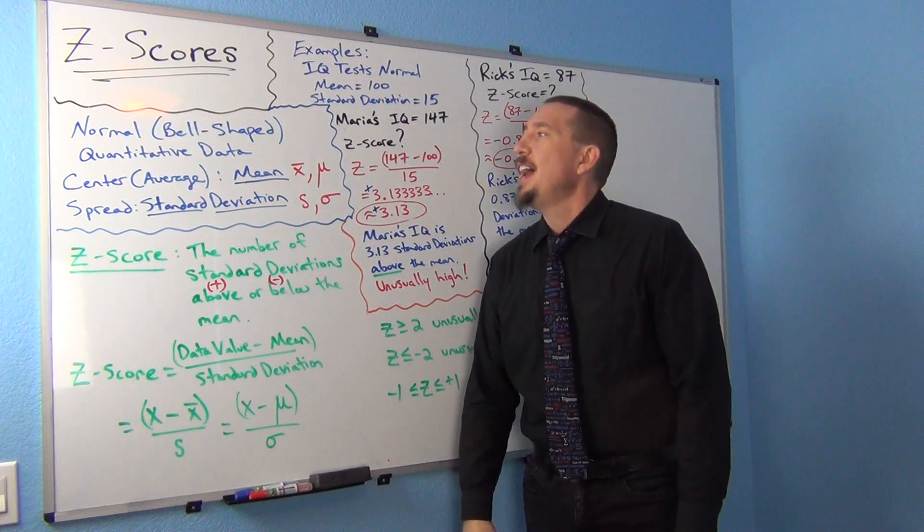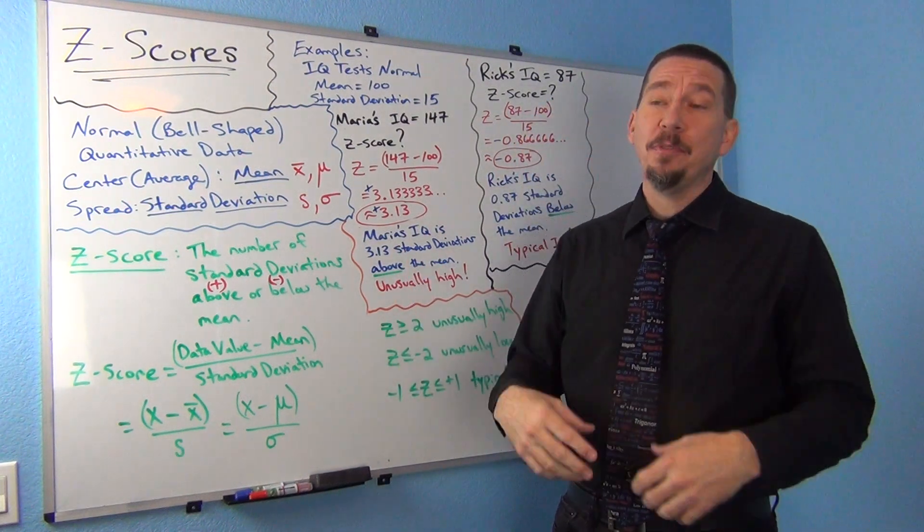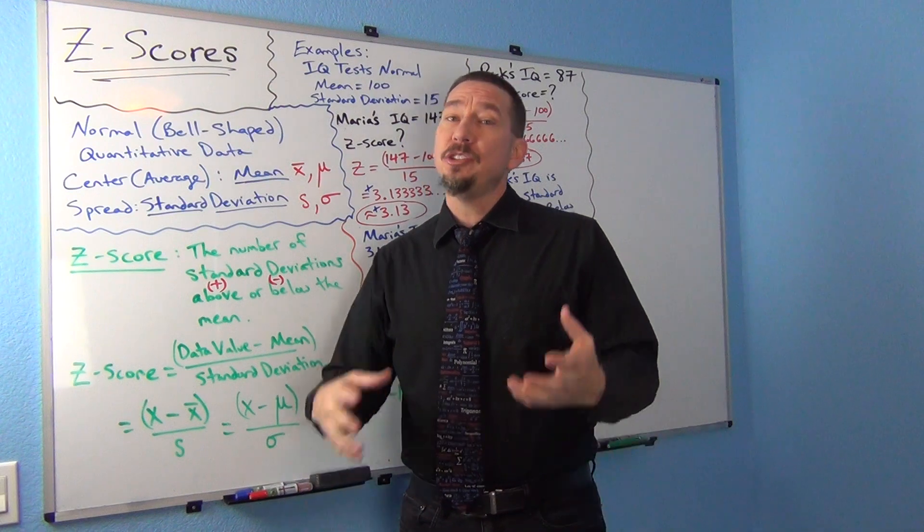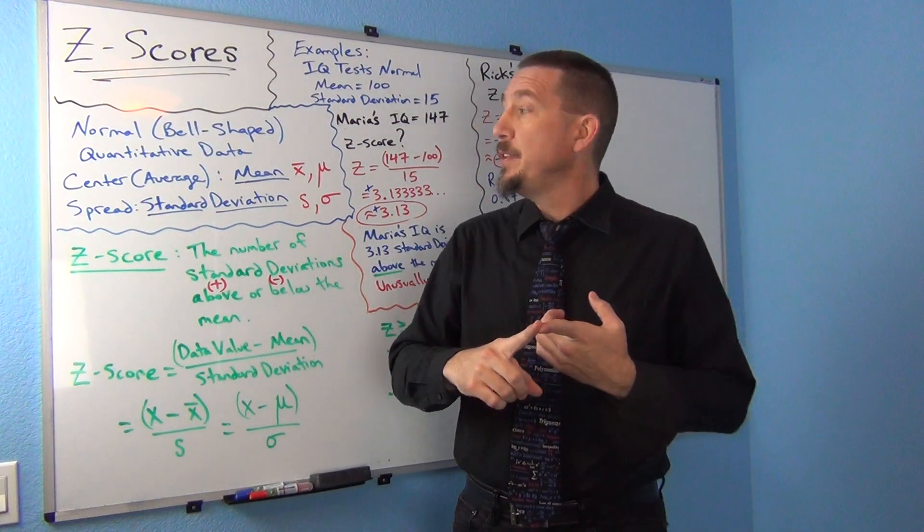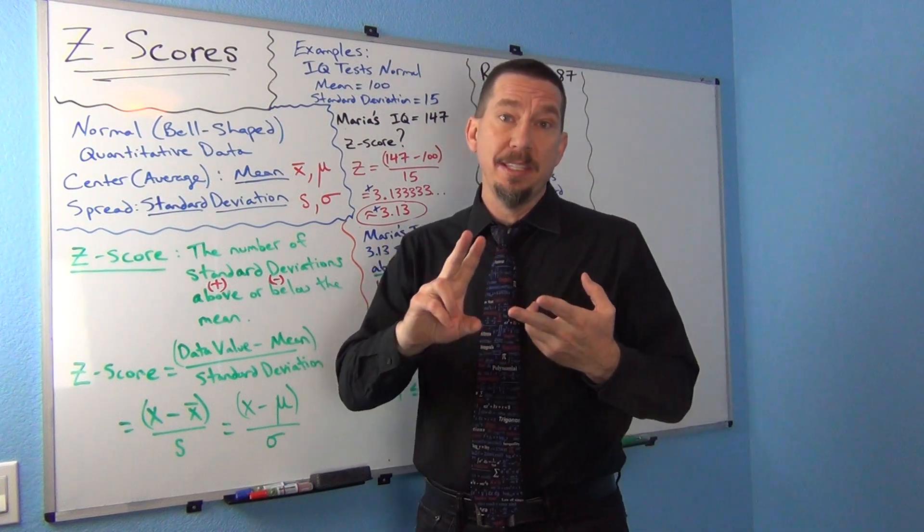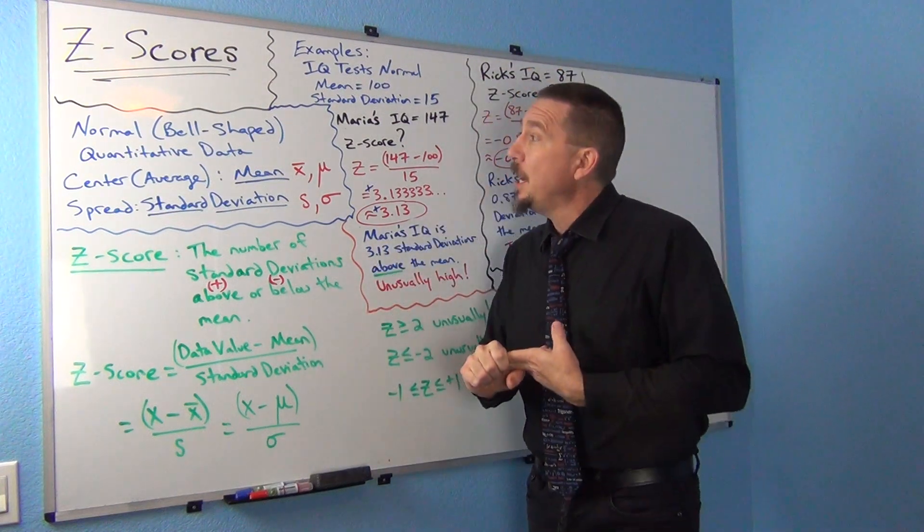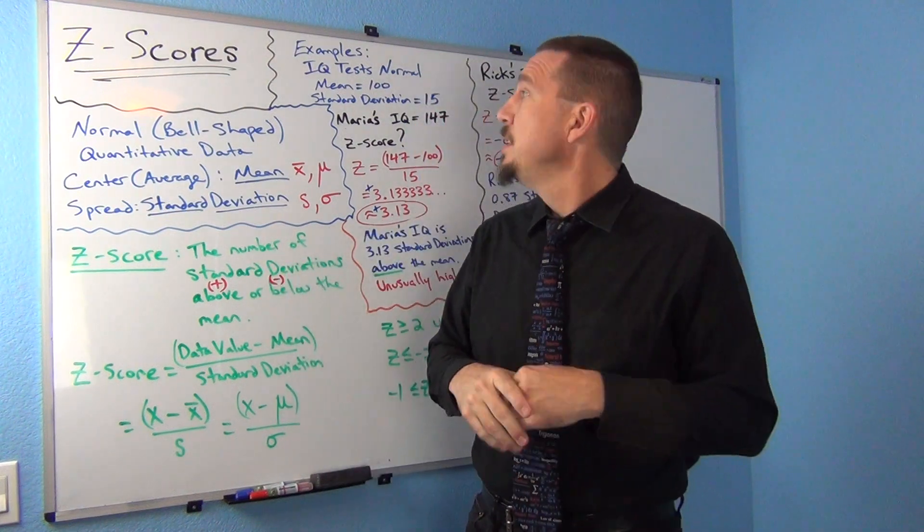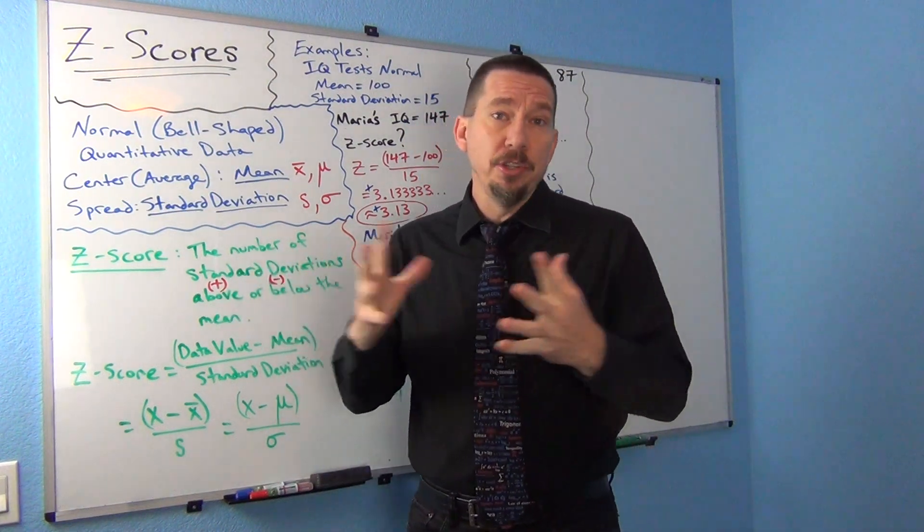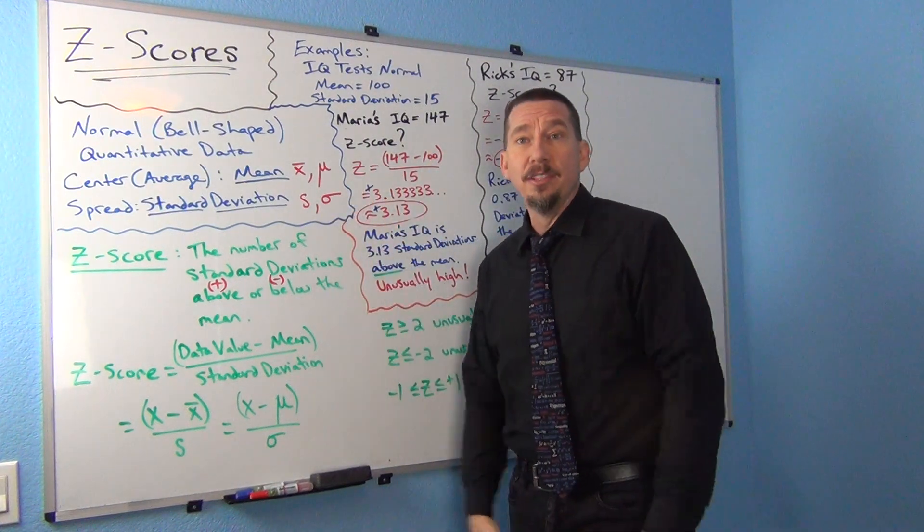Z-scores. They're very famous, especially for normal quantitative data. We also use them in a lot of situations: critical values in confidence intervals, and as test statistics, mainly for proportions. So there's a lot of uses of Z-scores in statistics, and I wanted to introduce what is a Z-score and how does it work.